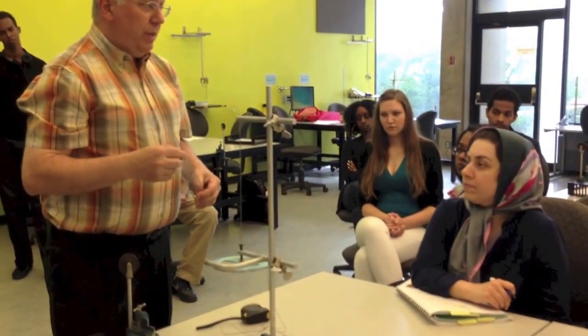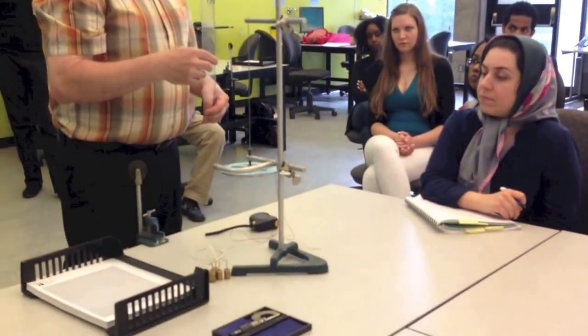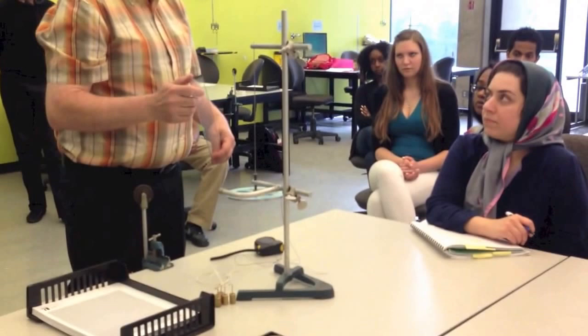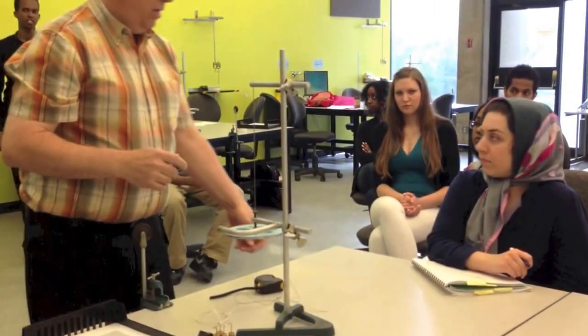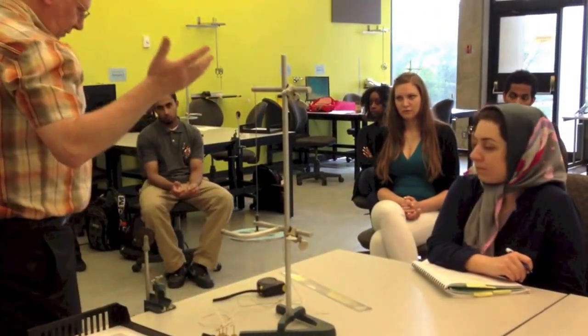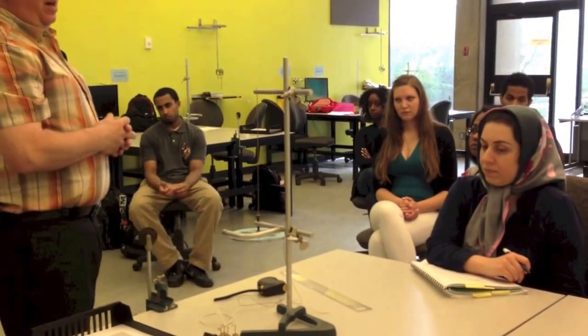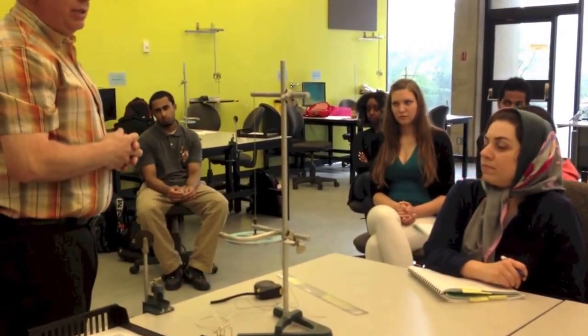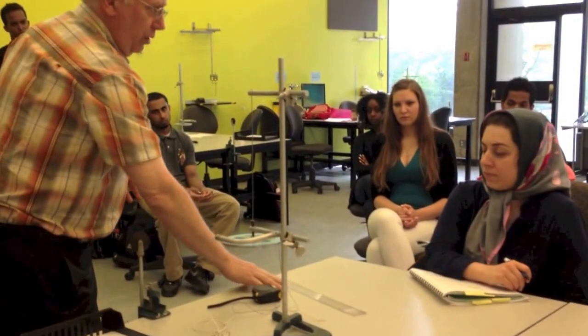So what other instrument that you have used in a previous lab could you use to get a much more precise reading? A vernier caliper. Vernier calipers allow you to measure at least ten times smaller than with the ruler alone.